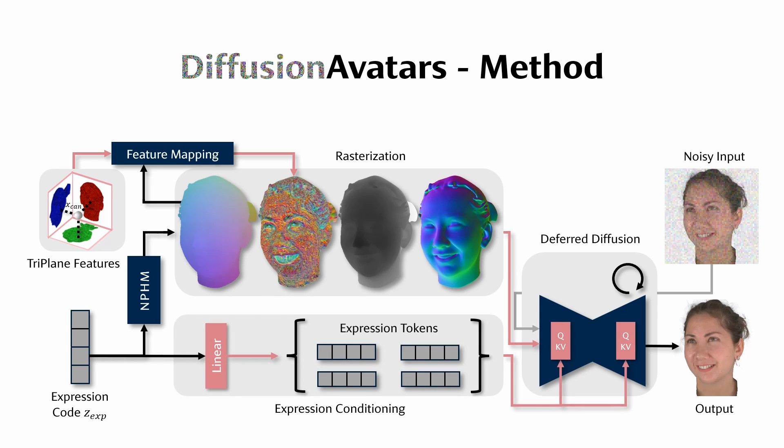Certain detailed expressions are difficult to synthesize from rasterized meshes alone. Thus, we introduce a second path through which the provided expression code can control the output. We decode a set of expression tokens that are fed into newly added cross-attention layers inside the diffusion model. Intuitively, this direct expression conditioning is responsible for fine details, while the rasterized images guide viewpoint, pose, and coarse expressions.